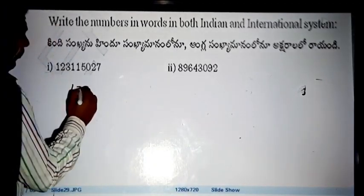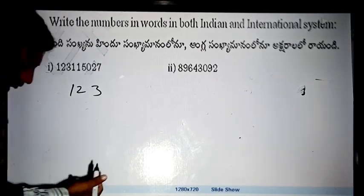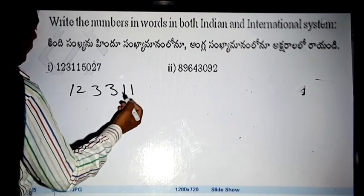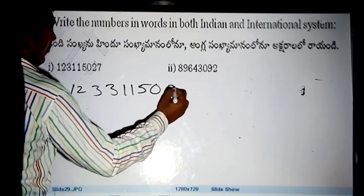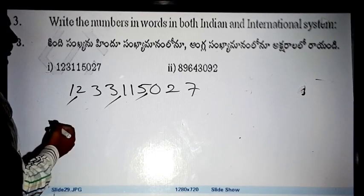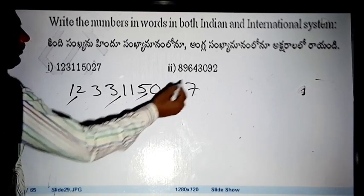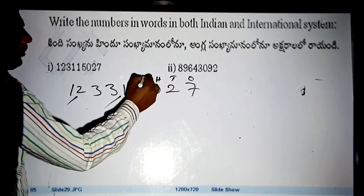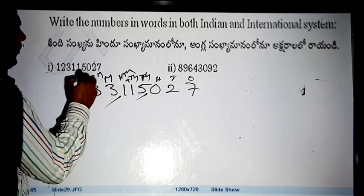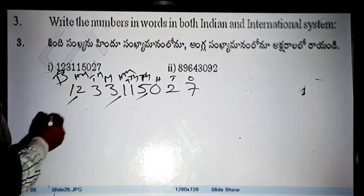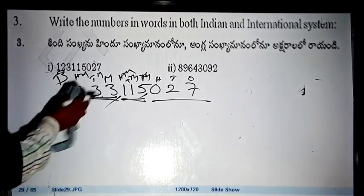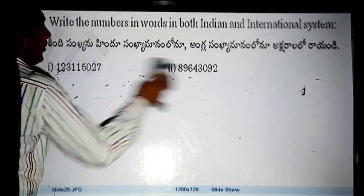Now look here, after three digits, after three digits, after three digits, after three digits, after three digits. Another million, ten million, hundred million, trillion, billion, and 9 billion, 233 million, 115 thousand, 27 thousand. Okay, this is the international system. Just the Indian system. This is the Indian system. Let's go.